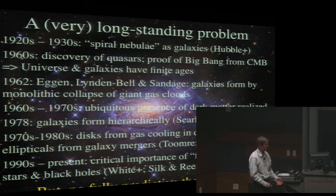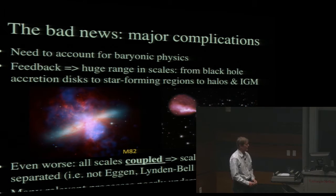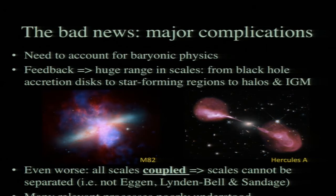In spite of the fact that people have been thinking about this for 50 years or more, we don't have any fully predictive theory for how galaxies form and evolve. The reason has to do with major complications recognized only in the past couple of decades. Baryonic physics is important because the light we see from stars comes from ordinary matter, not from dark matter. So in addition to the dark matter, we need to account for the baryonic processes that produce objects like stars and black holes.